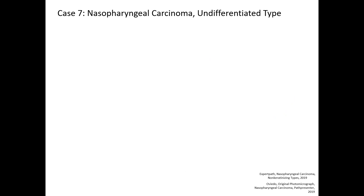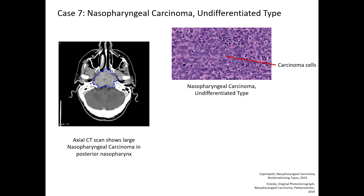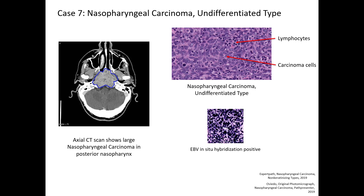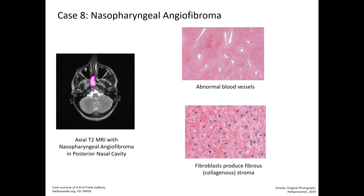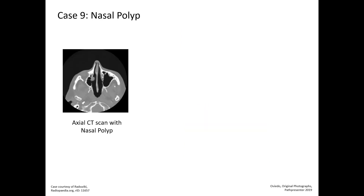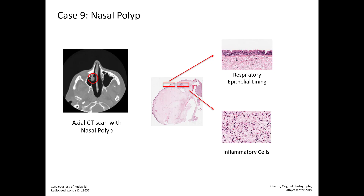Case 7 is nasopharyngeal carcinoma, undifferentiated type. The CT scan shows the large nasopharyngeal carcinoma in the posterior nasopharynx. On histology, you can see the carcinoma cells and the benign lymphocytes in the background. Nasopharyngeal carcinoma is positive for Epstein-Barr virus. Case 8 is nasopharyngeal angiofibroma — the CT scan shows it in the posterior nasal cavity; histology shows abnormal blood vessels and fibroblasts producing the collagen. Case 9 is a nasal polyp — histology shows a respiratory epithelial lining and a fair amount of inflammatory cells in the underlying stroma.